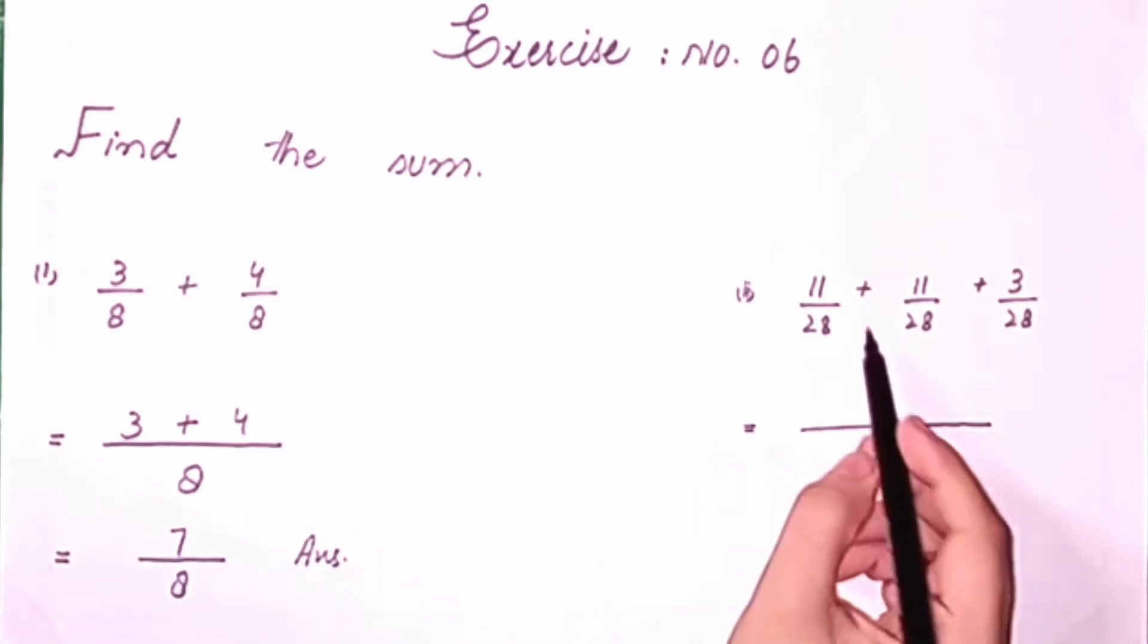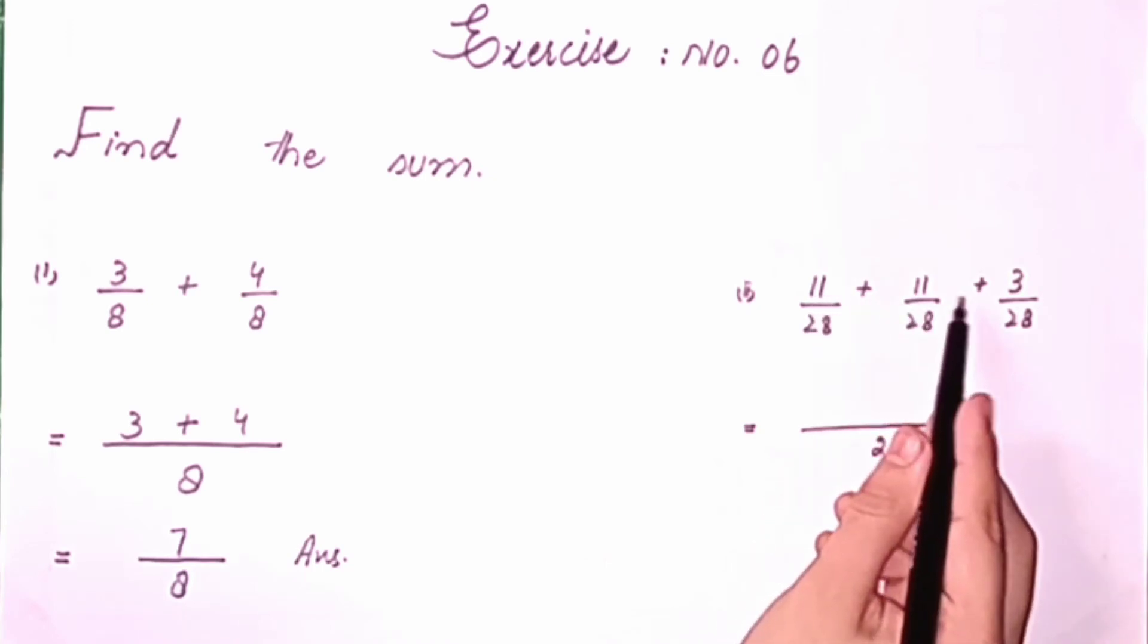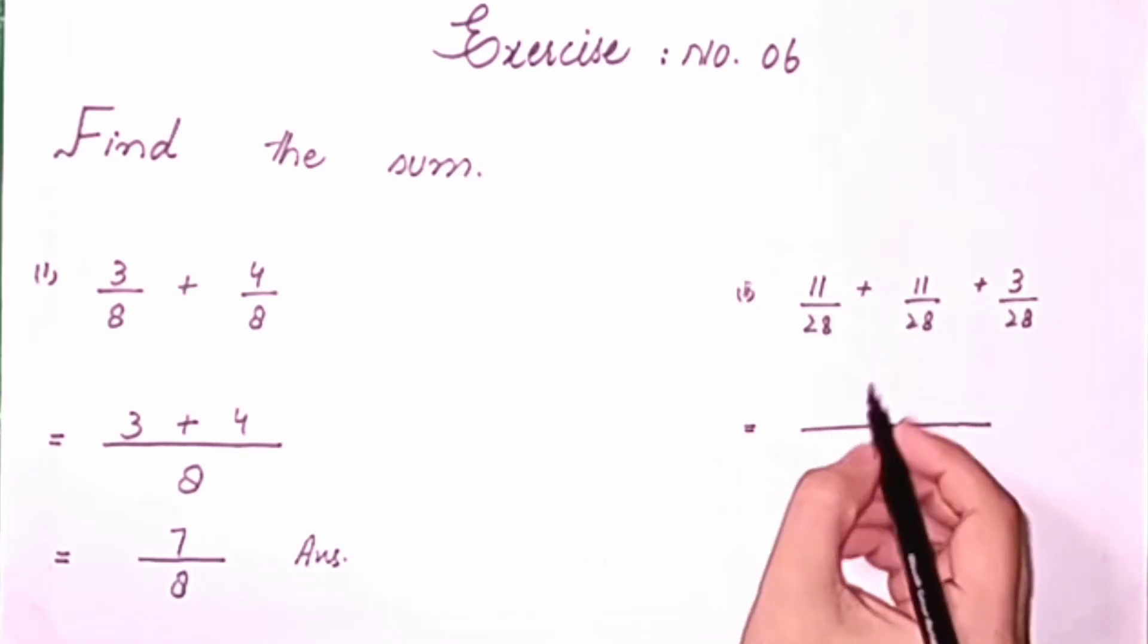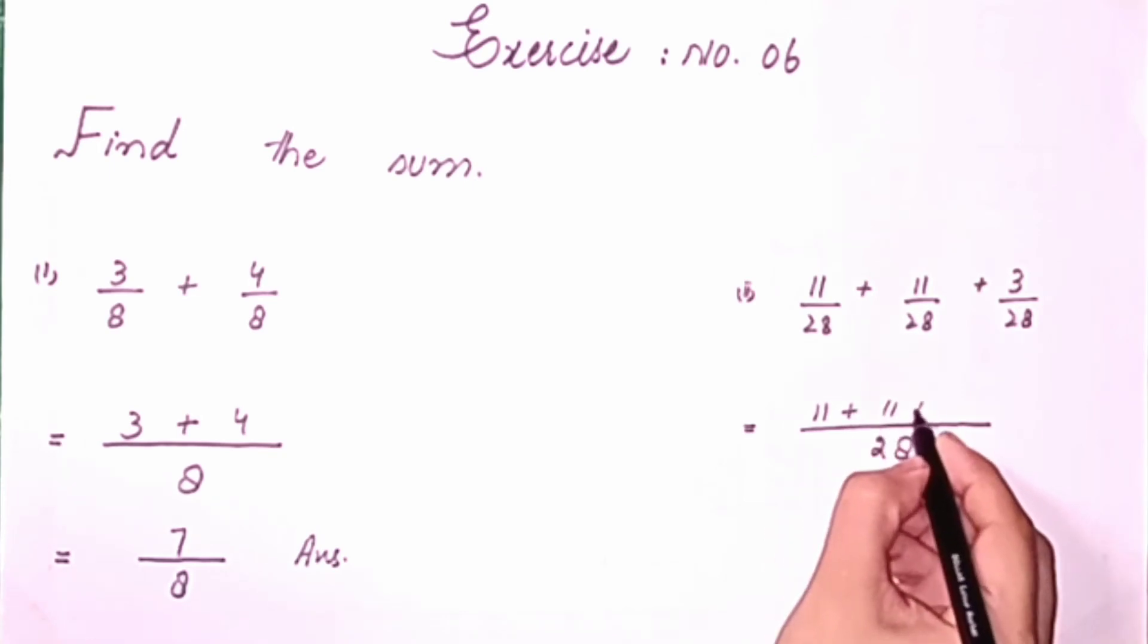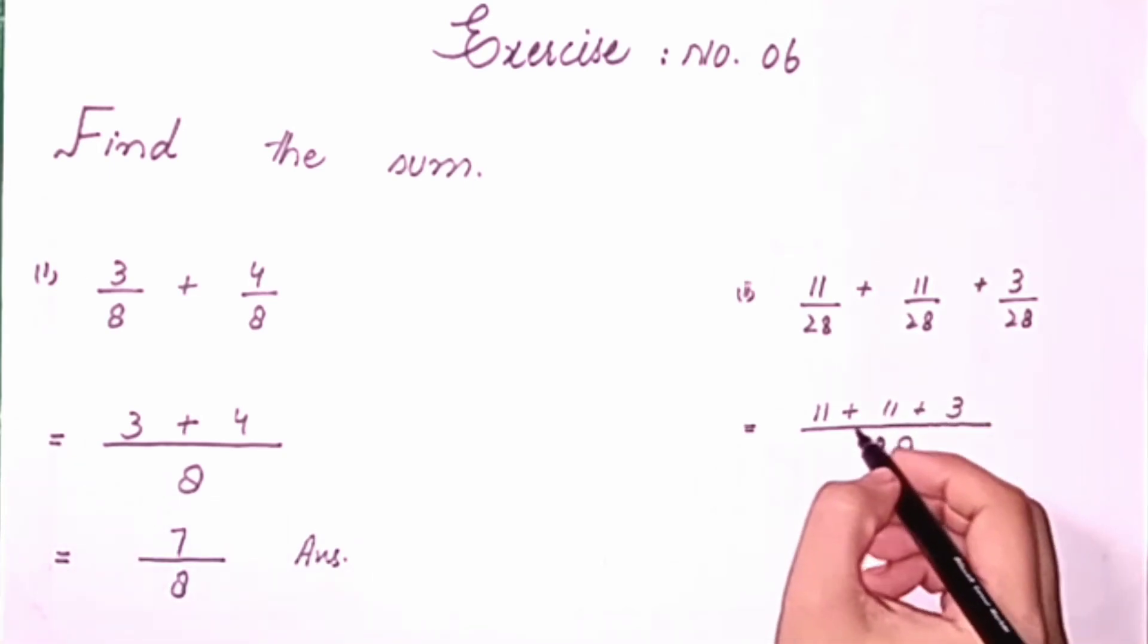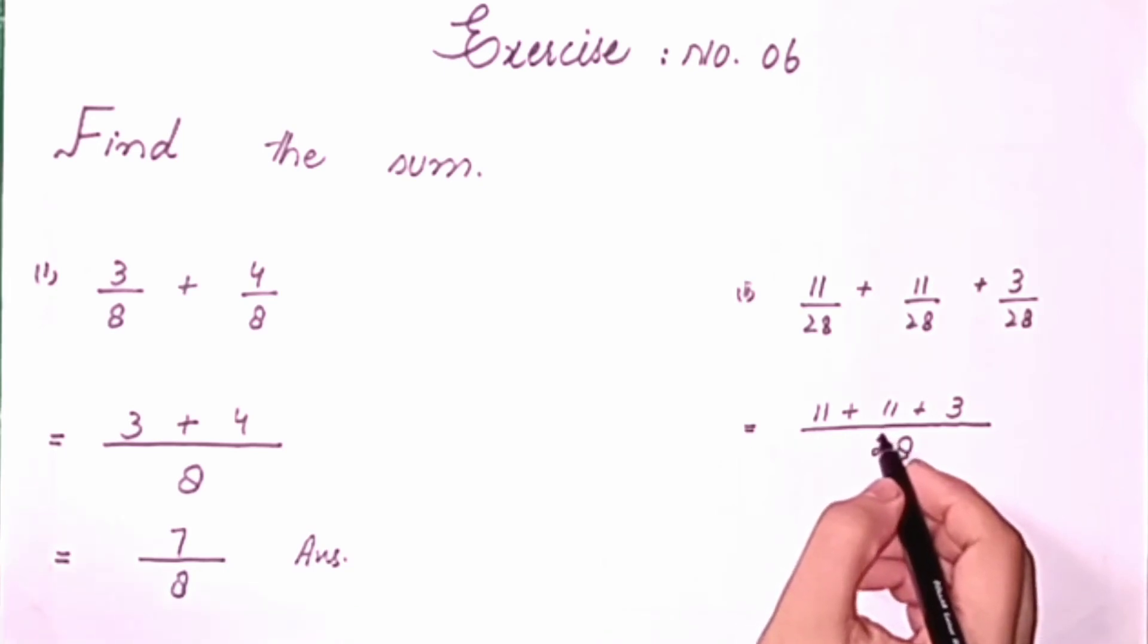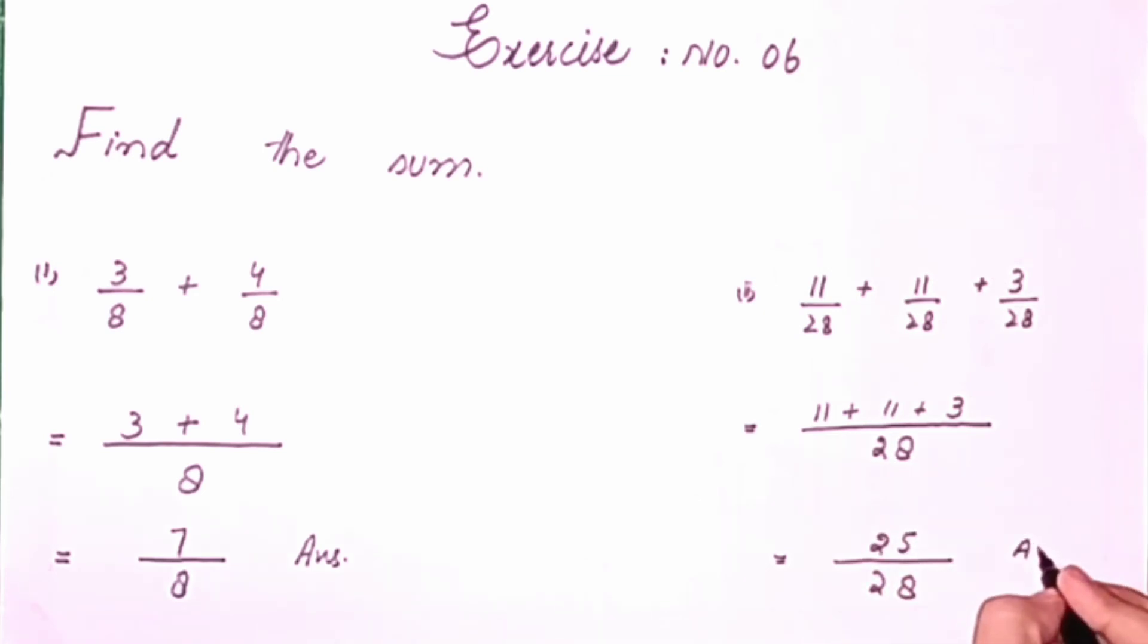Then we will write the numerators as they are: 11 plus 11 plus 3. Now students, we will make equals to, write 28 as it is, and add the numerators. How many will it be? 25. So 25 upon 28.